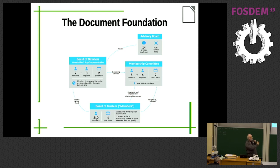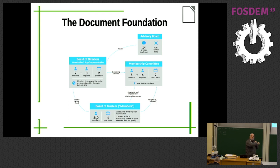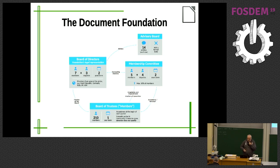Then we have a board of directors — these are two formal bodies that control each other. To be a director, you have to be a member, so you are independent in taking decisions, but the membership committee can check if you are respecting the statutes and the basic principles of the community.